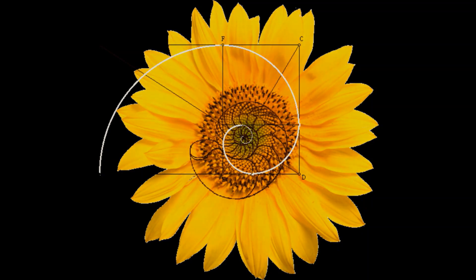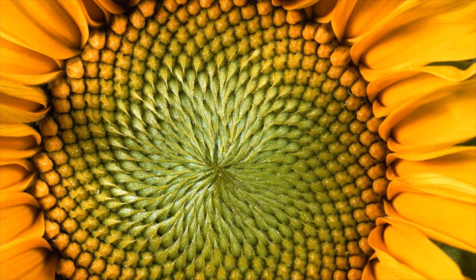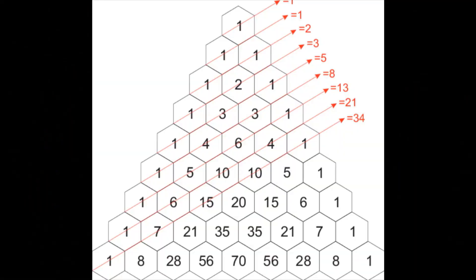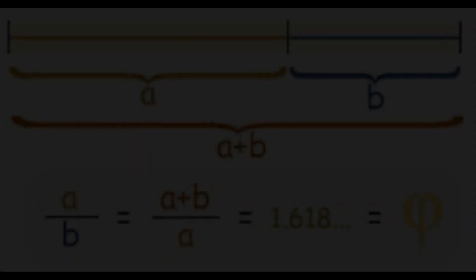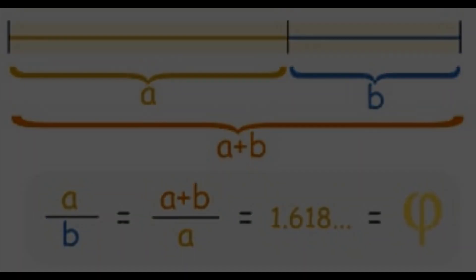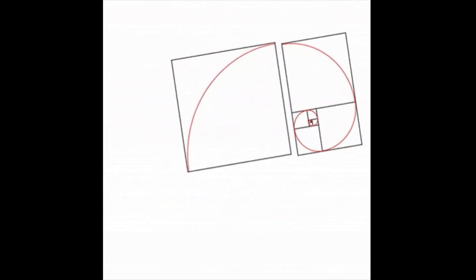But why does nature prefer this pattern? Nature prefers this pattern because it completely uses the space given and maximizes the number of seeds. The answer is not the Fibonacci numbers themselves — instead, it's the ratio between two successive Fibonacci numbers. If we divide 34 by 21, the ratio we get is approximately 1.618. This is called the golden ratio or the divine ratio, and it's denoted by the symbol phi.